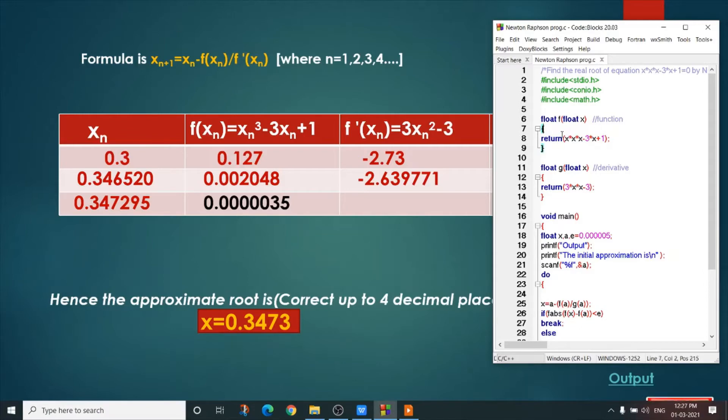Now, for the first function f, what is the body? Body is our equation, that is x³ - 3x + 1. And what is g? What is the body of g? Body of g is the derivative of f(x). So it is f'(x), that is 3x² - 3.